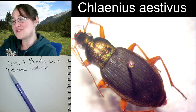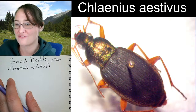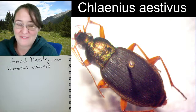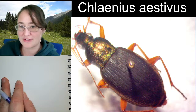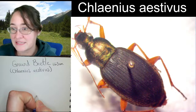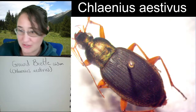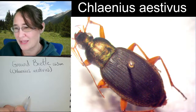Ground beetles are very, very common beetles, and so when people think of a stinky beetle when you flip over a rock, most people are thinking of this type of ground beetle. For our ground beetle here, we're going to be starting off with just a really light line sketch, and then we're going to be zooming in and checking out different features. I was zooming in before class and I've noticed some odd things happening up in the head region, especially near the mandibles.